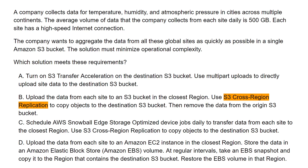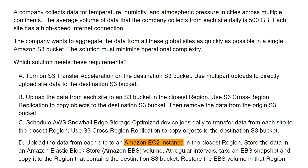'S3 cross-region replication' provides low latency access to data in different geographical locations. 'AWS Snowball Edge Storage Optimized' is a device used for very large-scale data physical migration when you don't have high enough bandwidth. 'Amazon EC2 instance' is a customizable web service that provides secure, resizable compute capacity in the cloud. 'Amazon Elastic Block Store,' or EBS, is block storage that enables you to keep data persistently on a file system, even if you shut down your EC2 instance. Make sure to check the description for more information on EBS and block storage.